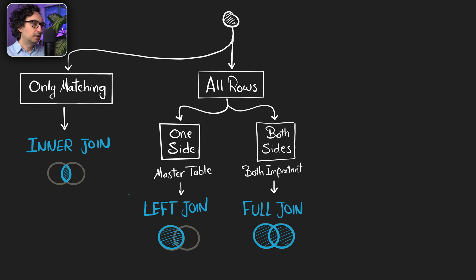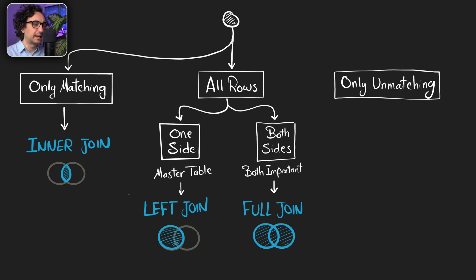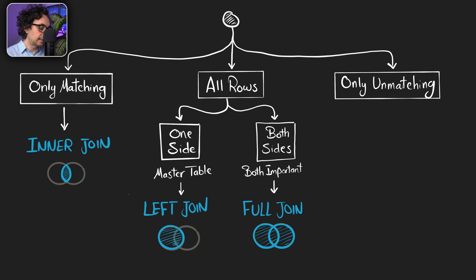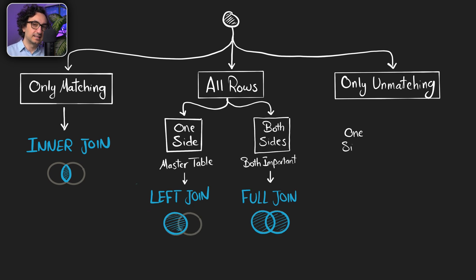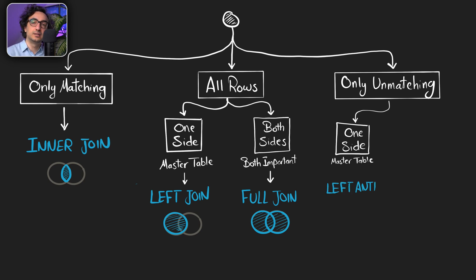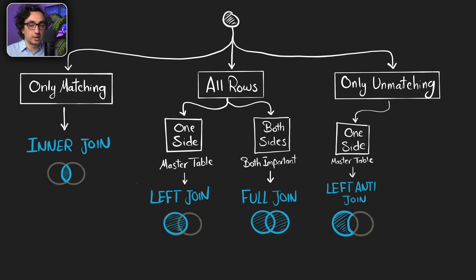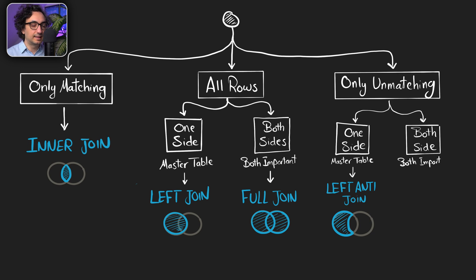The third path: if I'm interested to see only the unmatching data — doing some kind of checkups. Here again, the same question: do I want to see the unmatching data from only one side where one table is important? Then I go and use the left anti join — I want to see the unmatching data from one table and I'm using the other table only for the check. But if both tables are important, there is no main table and secondary table, then I go and use the full anti join.